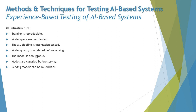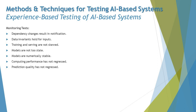For monitoring: dependency changes result in notifications, data invariants hold for inputs, training and serving are not skewed, models are not too stale, models are numerically stable, computing performance has not regressed, and prediction quality has not regressed. These are all the checklist items from Google which can be used as a template checklist for AI-based systems and are very helpful for performing experience-based testing.